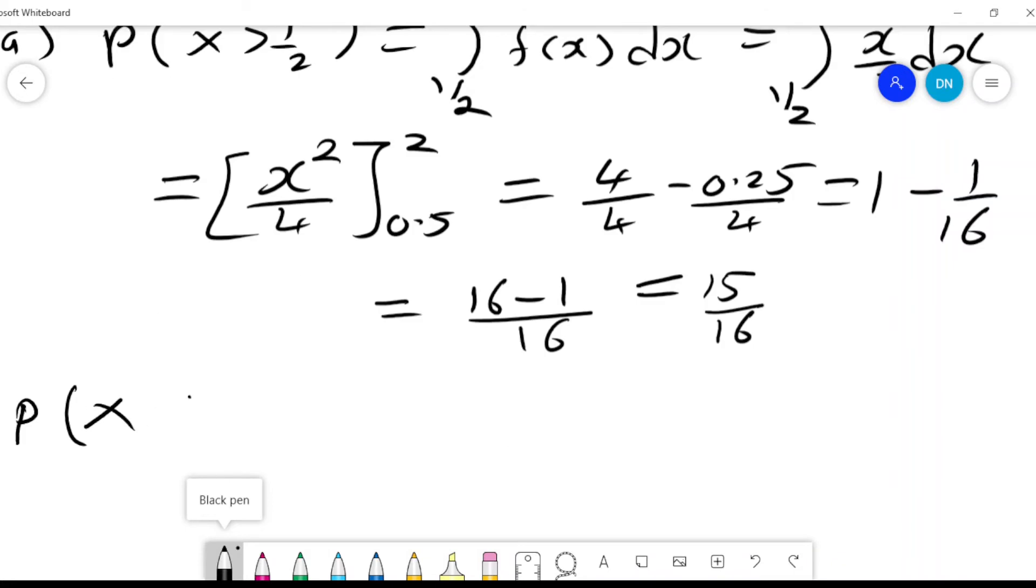Probability X is less than or equals to 1. It will basically be from 0 to 1. Why from 0 to 1? Remember the value of X lies between 0 and 2, and so if it's less than 1 it will be between 0 and 1. X over 2 dx.